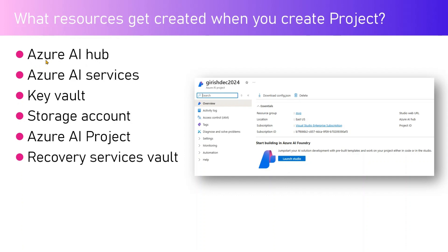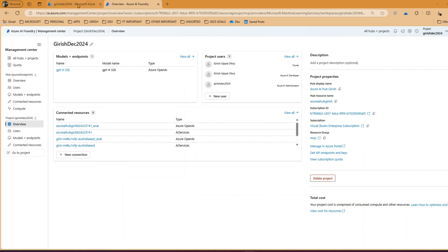Resources created with a project: there will be a hub - if one already exists you can point to it, otherwise one is automatically created. Various Azure AI services, a Key Vault to store credentials, and a storage account to store all AI-related artifacts are also provisioned. Additionally, an Azure AI project itself and a Recovery Services Vault are created. Other things like Application Insights are not mandatory but can also be created.